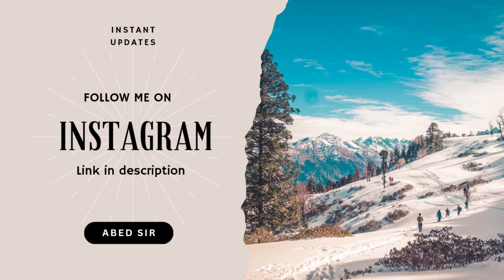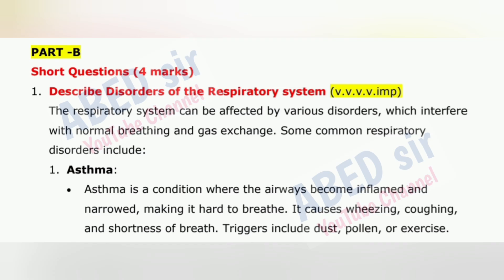First important question is 1: Describe disorders of the respiratory system. The respiratory system can be affected by various disorders which interfere with normal breathing and gas exchange. Some common respiratory disorders include: 1. Asthma — a condition where the airways become inflamed and narrowed, making it hard to breathe. It causes wheezing, coughing and shortness of breath. Triggers include dust, pollen or exercise.